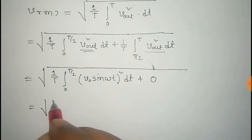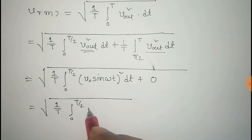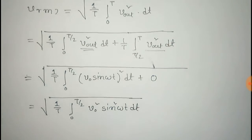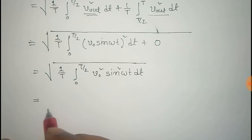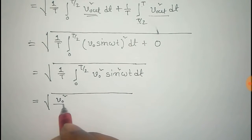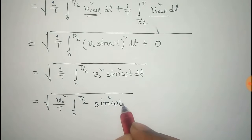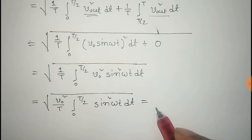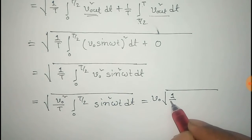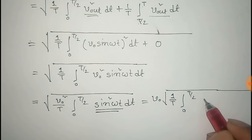This equals the square root of (1/T) times the integral from 0 to T/2 of V₀² sin²(ωt) dt. Since V₀² is a constant, it comes out of the integral. We can also take V₀² out of the square root, giving V₀ times the square root of (1/T) times the integral from 0 to T/2 of sin²(ωt) dt.